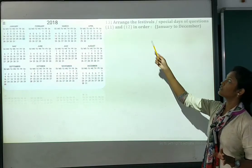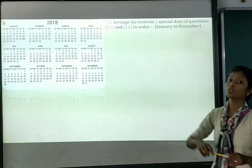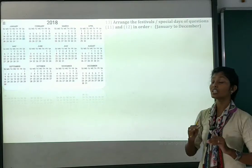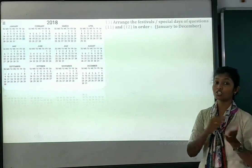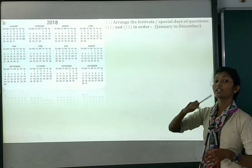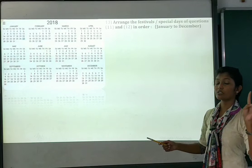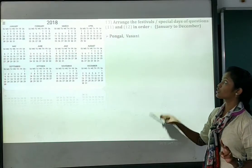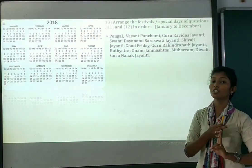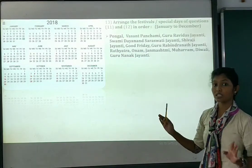Number 13: arrange the festivals and special dates from questions 11 and 12 in order. You have to mention them in ascending order — from January to December — showing first, second, third, fourth, and so on. I will share the video so you can see and write them.